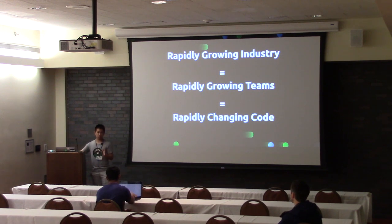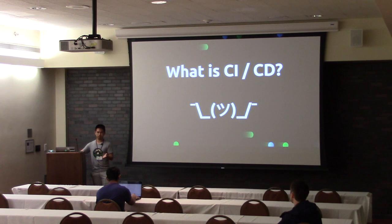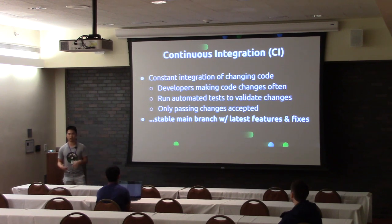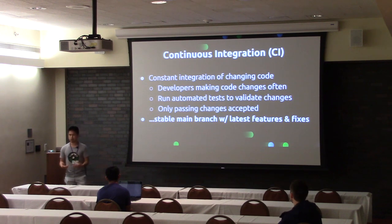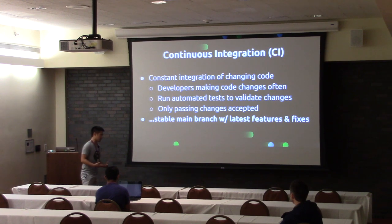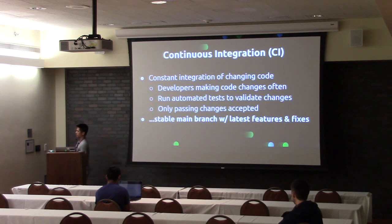The industry's response to this is something called CICD. CI is continuous integration — the constant integration of changing code into the main code base. Developers make code changes often, you run automated tests to validate those changes and make sure they didn't break anything, and then only changes that passed all the tests are accepted and merged into the main code base. This means you have a main stable branch with the latest features and bug fixes.